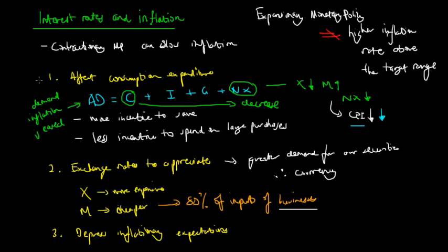In summary, there are three channels through which interest rates can affect inflation: firstly, through consumption expenditure — people have less incentive to spend and more incentive to save; secondly, through exchange rates — exports become more expensive and imports become cheaper, reducing aggregate demand and lowering the CPI; and thirdly, high interest rates suppress inflationary expectations, meaning people have less expectation that inflation will occur in the future.